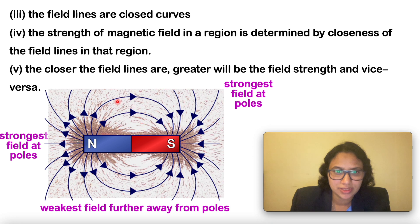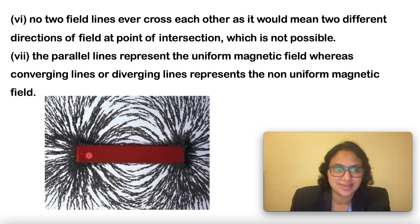The closer the field lines are, greater will be the field strength, or vice versa. Another important characteristic is no two field lines ever cross each other. What does it mean? It means that it would have two different directions at the point of intersection, which is not possible.